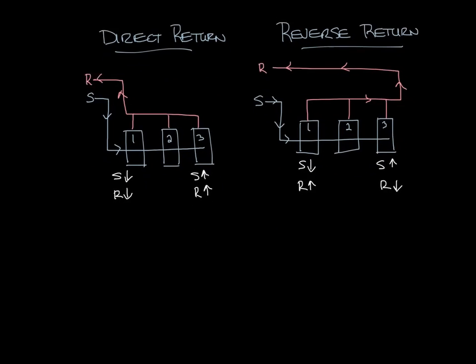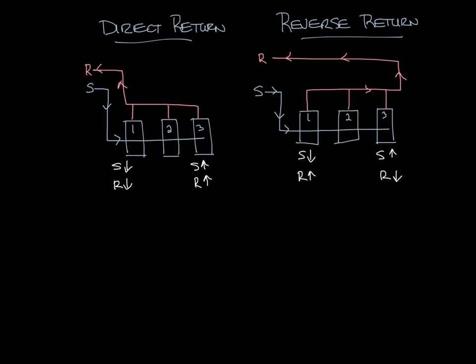Okay, so with reverse return it's an inherently balanced system. All three units have essentially the same flow regardless of flow conditions. So you have more even flow through all the units.